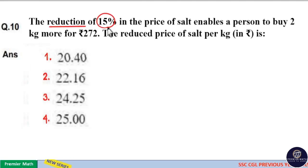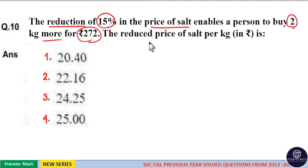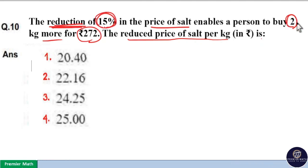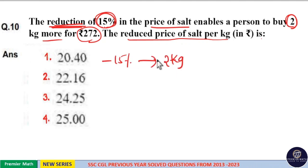The reduction of 15% in the price of salt enables a person to buy 2 kilogram more for Rs.272. The reduced price of salt per kilogram is what we need to find. This reduction of 15% leads to 2 kilogram additional quantity.